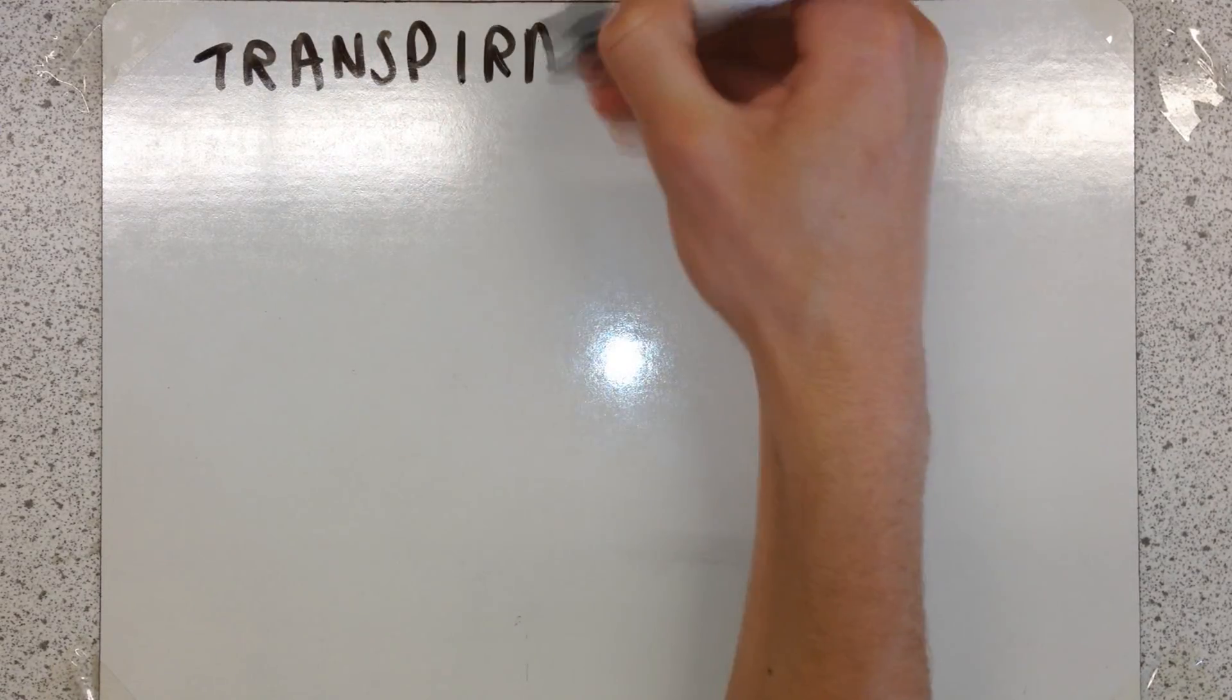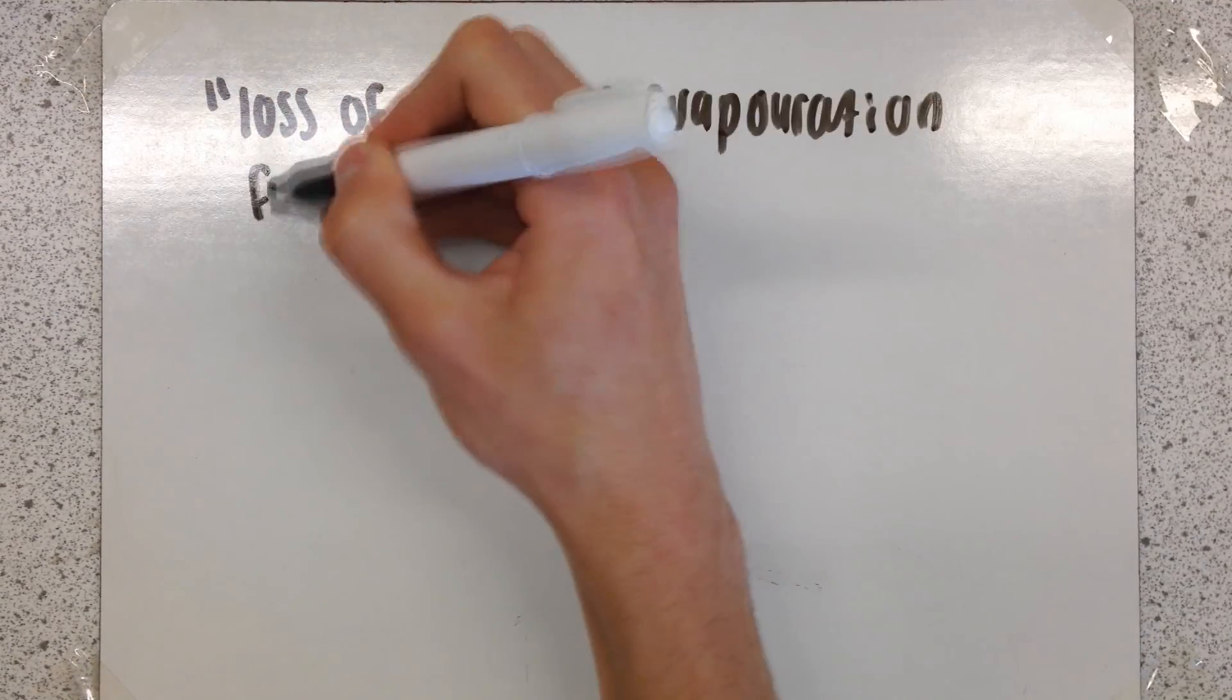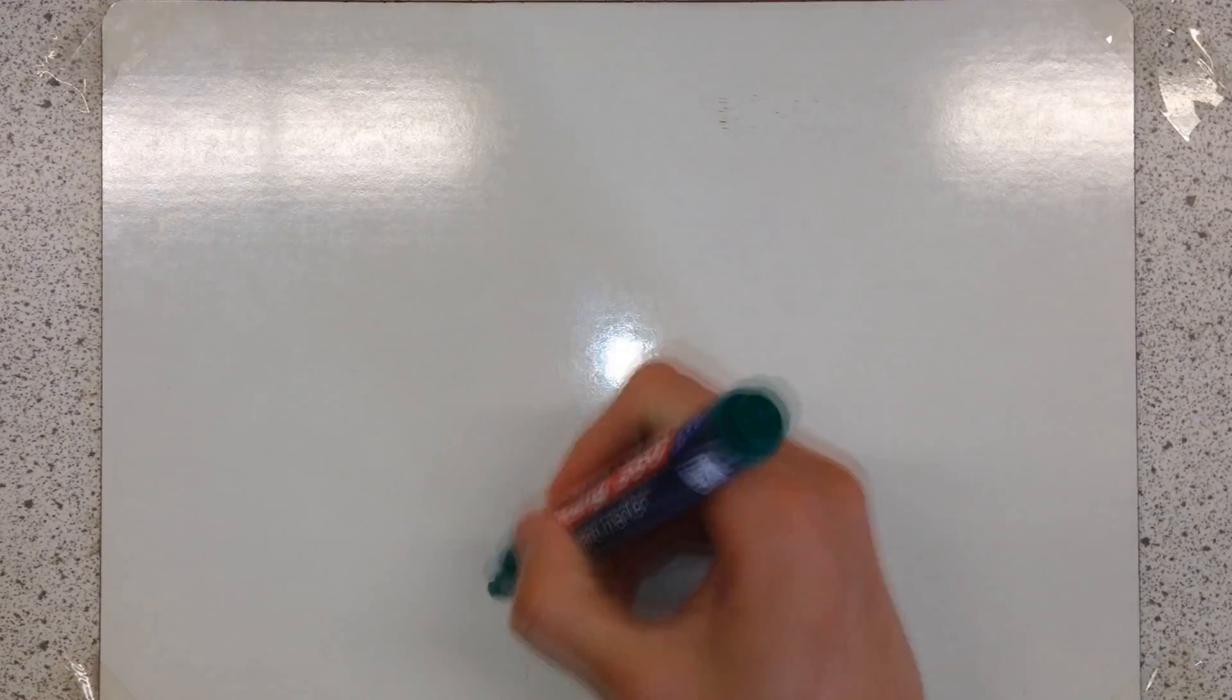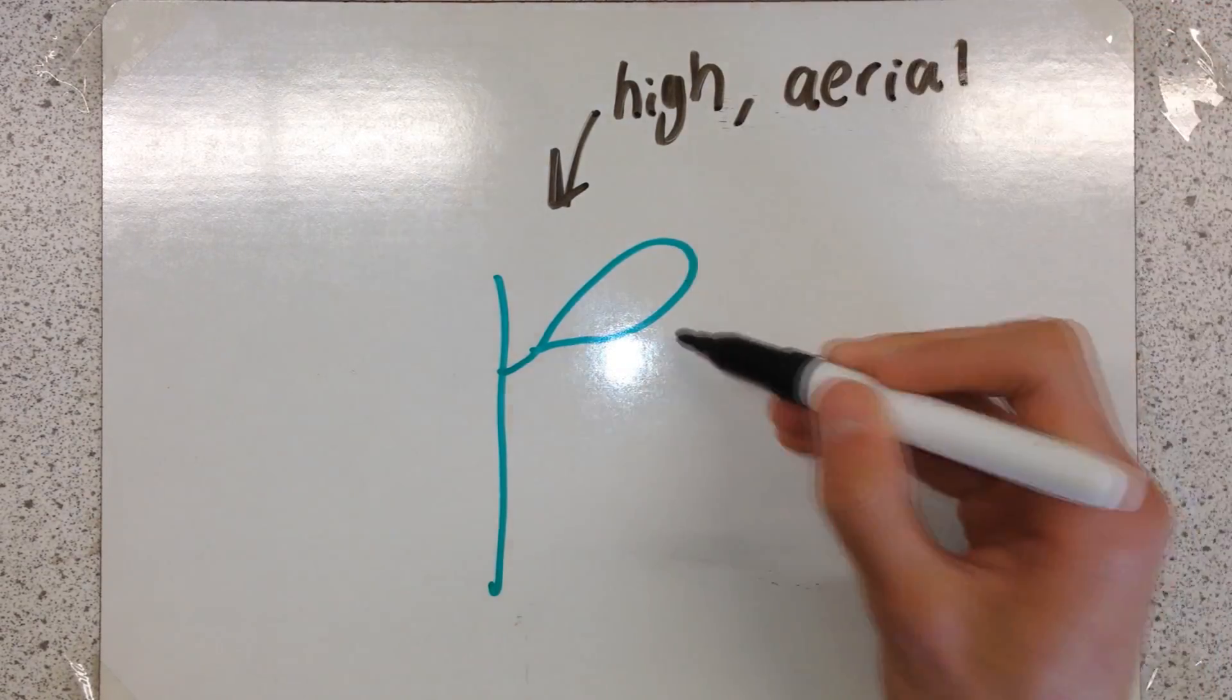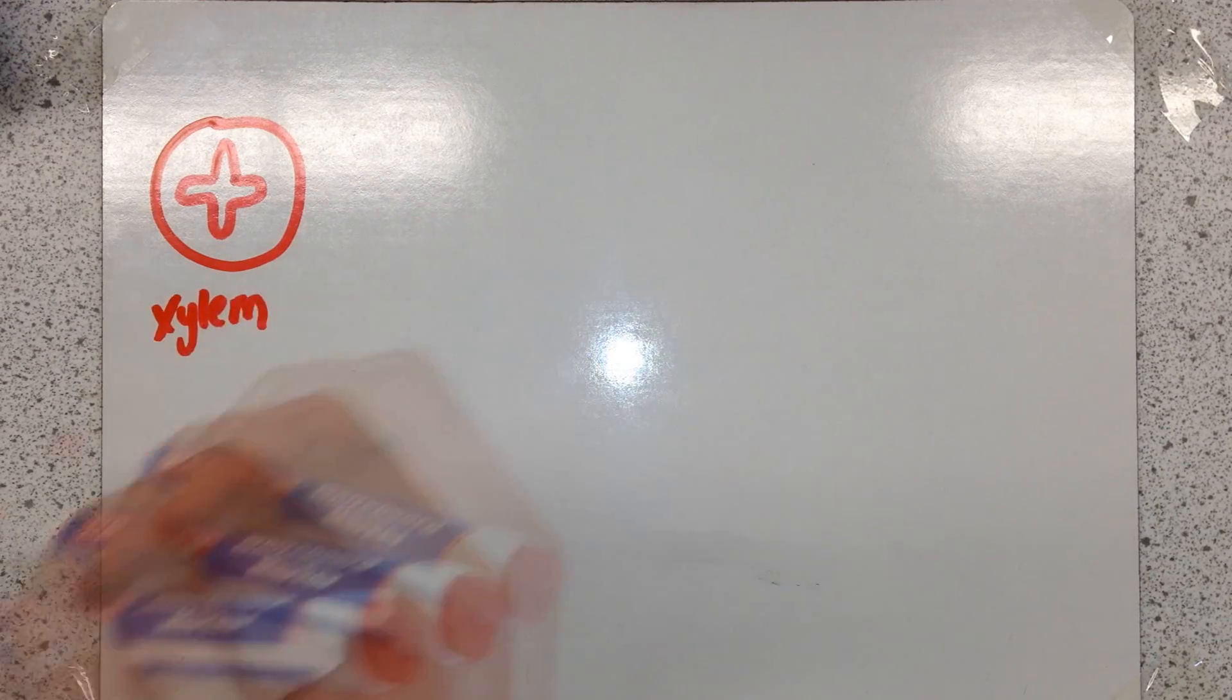In today's video we're going to talk about transpiration. Transpiration is the loss of water by evaporation from aerial parts of a plant. Aerial parts of the plant include the leaves, typically found high up the plant. Here I'm going to show the xylem going into the structure of a leaf.